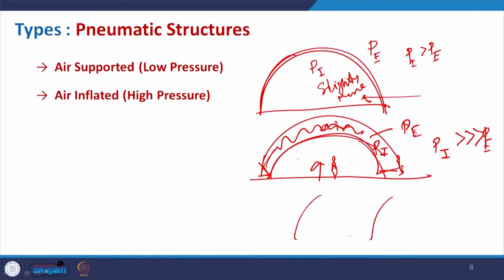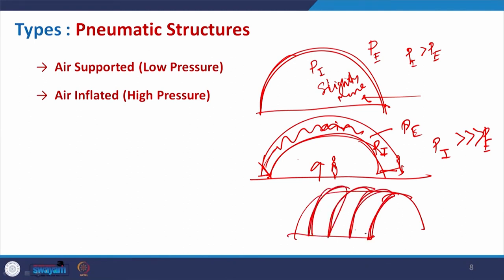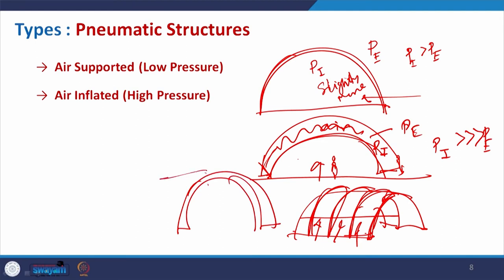For the air-inflated type, we cannot have a single continuous two-layer envelope everywhere. To give rigidity for a barrel vault form, instead of a continuous one we have segments — individually inflated cushion-like sections. If you take a cross section, it is like a series of cushions connected to each other, creating the air-inflated or high-pressure pneumatic structure.